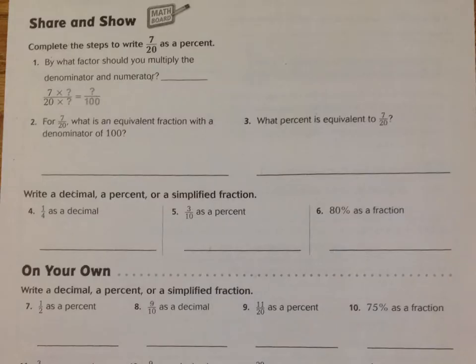For this share and show, make sure that you read all the directions for each question. And when working with fractions, make sure that you're working with a denominator of a hundred. Make sure that you're making the denominator a hundred, and then multiplying whatever you multiply the denominator by, you also multiply the numerator by. That's what makes it an equivalent fraction. Press pause while you work through the share and show, and then press play when you are ready to go over the answers.